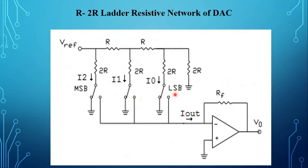The second method is the R-2R ladder network. This is an alternative to the binary weighted input DAC, called the R-2R ladder type DAC. Mostly the R-2R ladder method with DAC 0808 is used, since it can achieve a much higher degree of precision. In this type, reference voltage is applied to one of the switch positions and the other switch position is connected to ground.